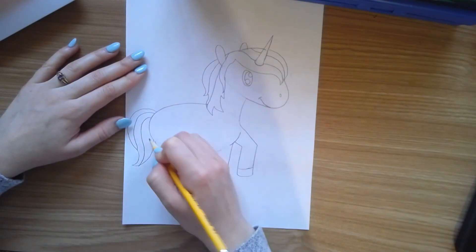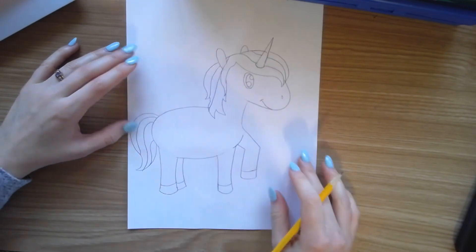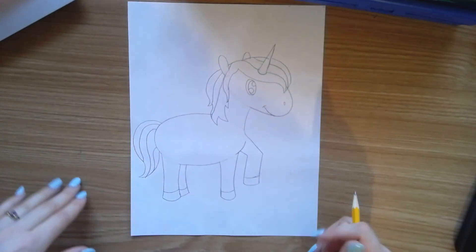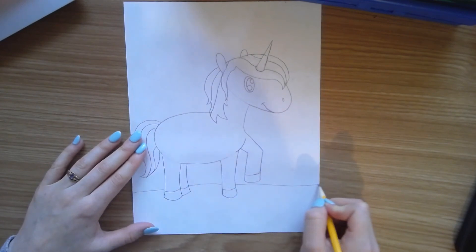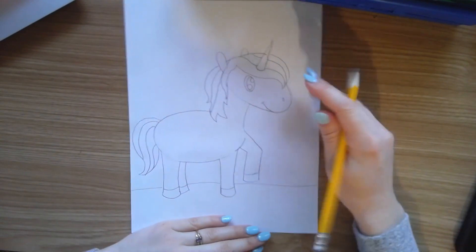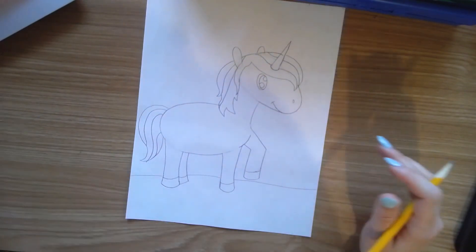And remember, we shouldn't have a floating unicorn. Always add a cute little background so you have something for your unicorn to stand on, whether it's in a meadow, mountains, or trees. Add some details in the background. Of course, thanks for watching.